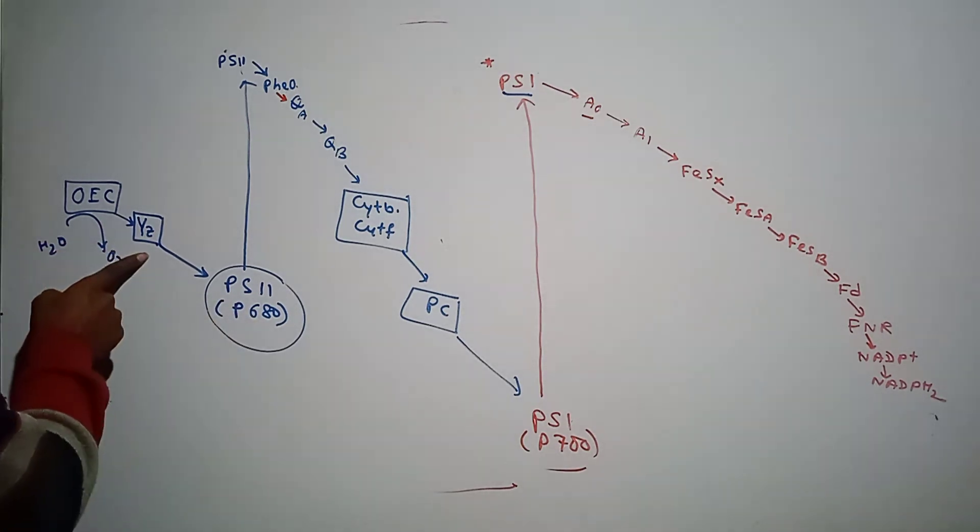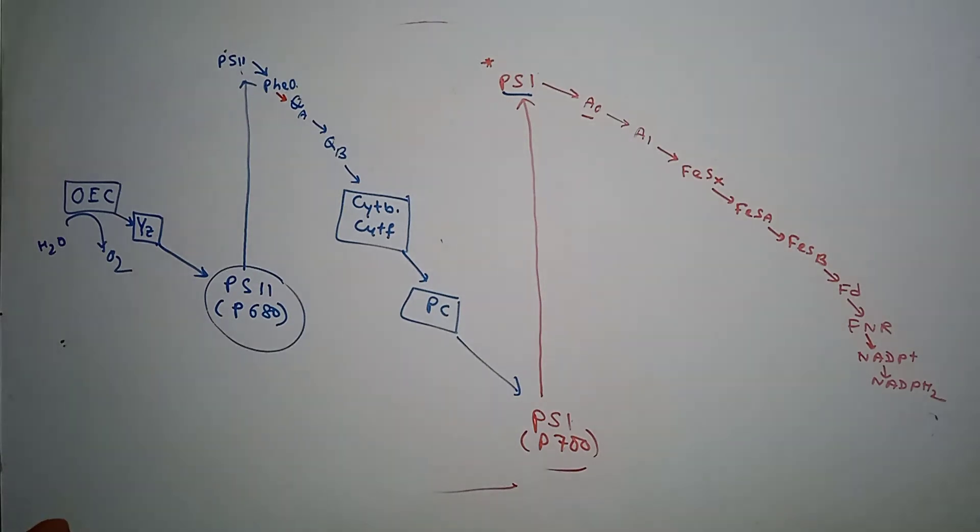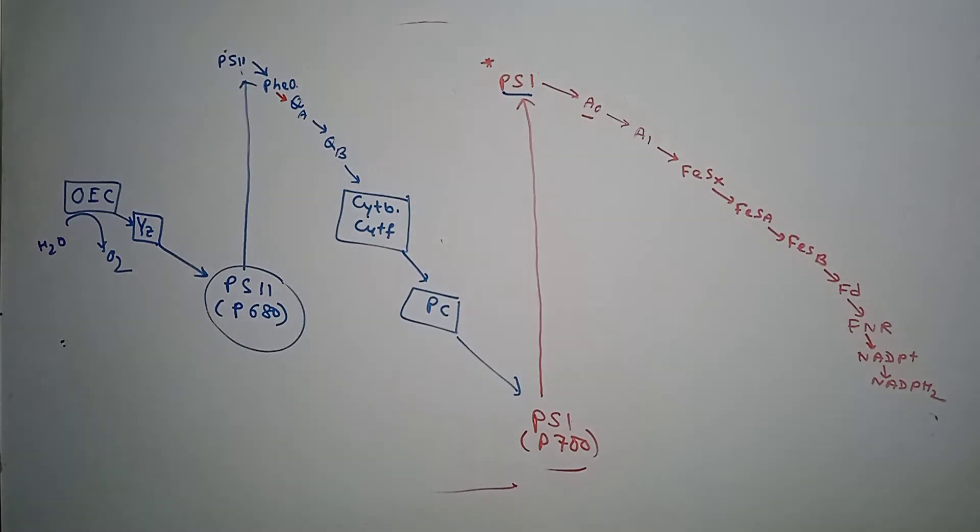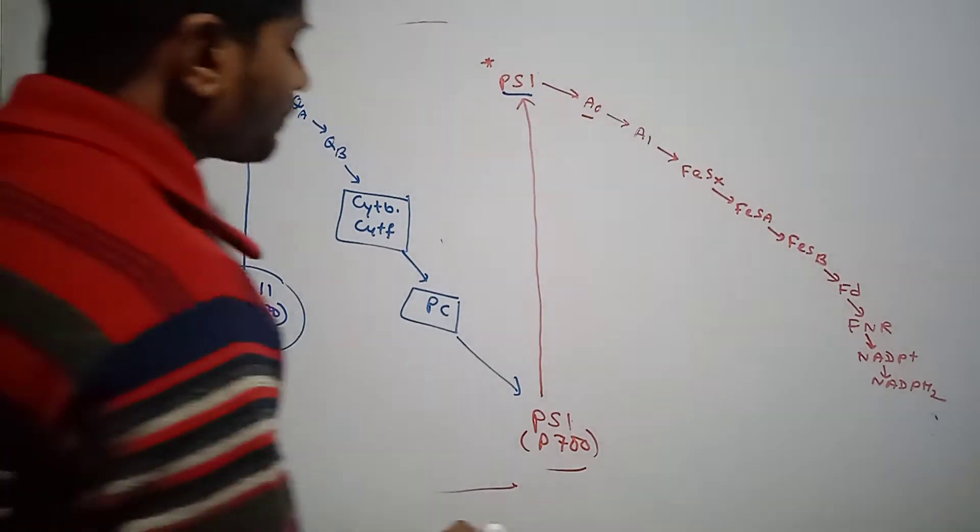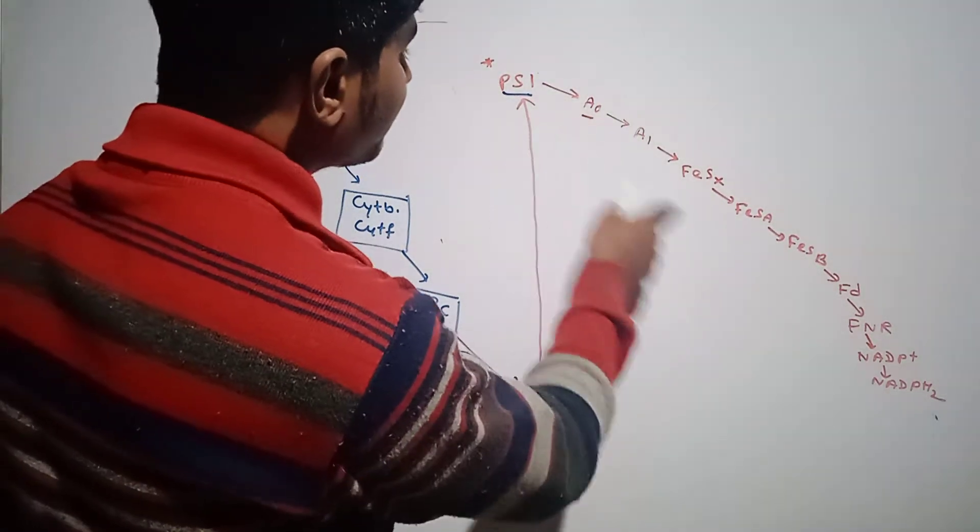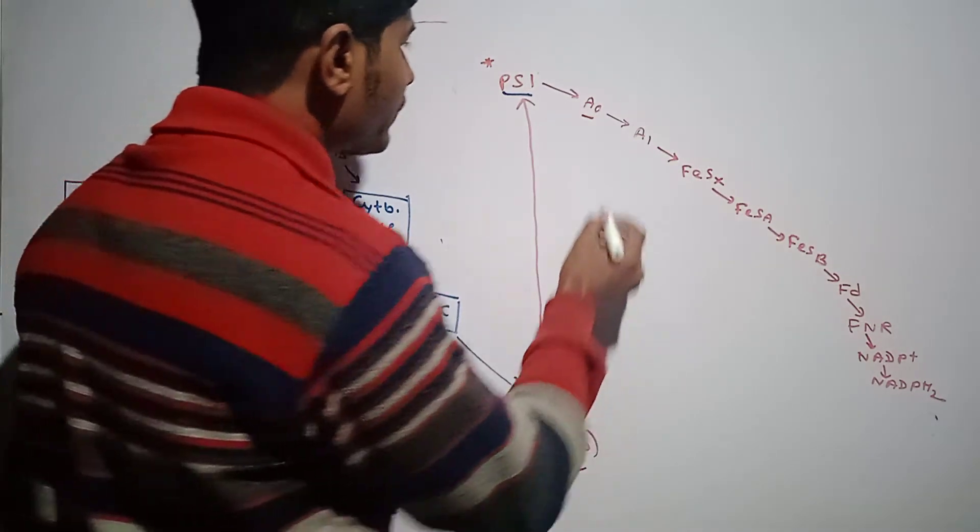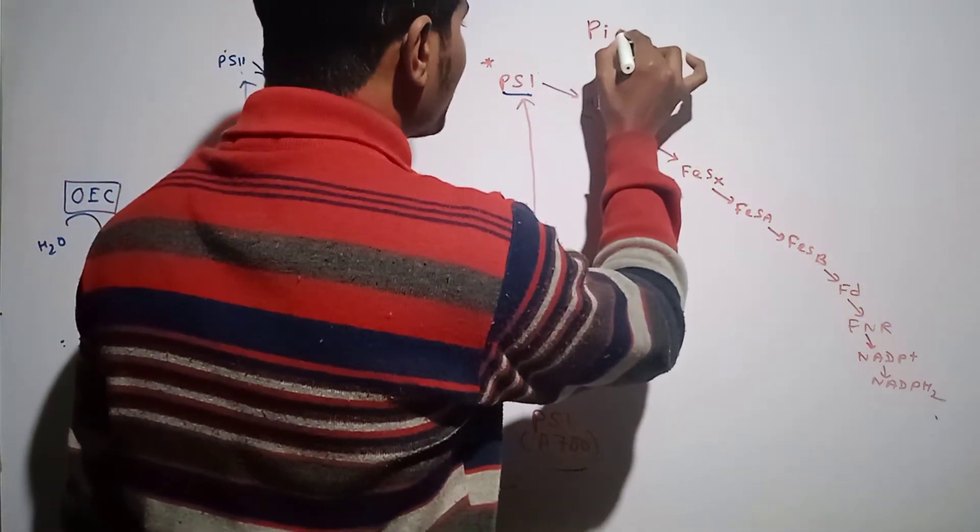This is the Z-scheme. As it is in the shape of a Z, it is called the Z-scheme. Now, how can you remember the electron carriers in their respective order? First of all, there is a simple trick for this.